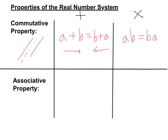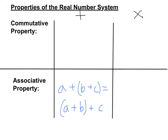Next, let's look at the associative property. Again, these are all for real numbers — these variables are generalizations, so variable a can stand for any real number. The associative property deals with any three real numbers. For addition: a plus the quantity b plus c is equal to the quantity a plus b plus c. Similarly with multiplication: a times the quantity of b times c is equal to the quantity of a times b, times c. In short, you can move parentheses around in an addition or multiplication problem with three things and it doesn't change the value.